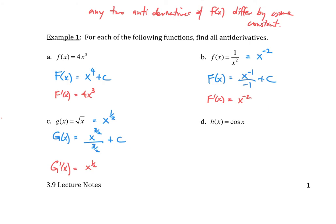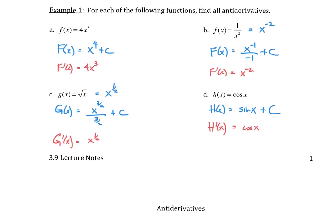Last example: capital H of x is the antiderivative of cosine of x. Since the derivative of sine of x is cosine of x, H of x equals sine of x plus c. As a quick check, H prime of x is cosine of x plus 0, which is just cosine of x. So these are four examples of antiderivatives.